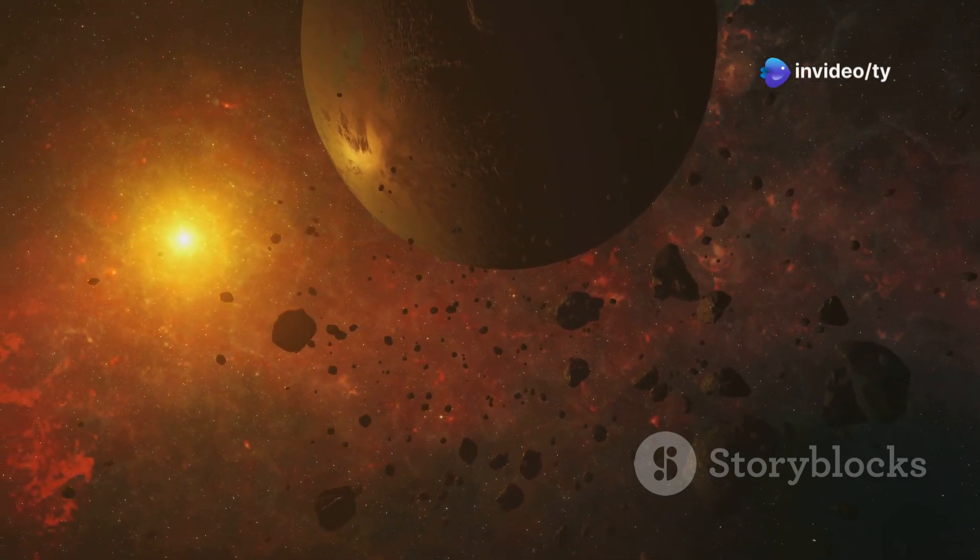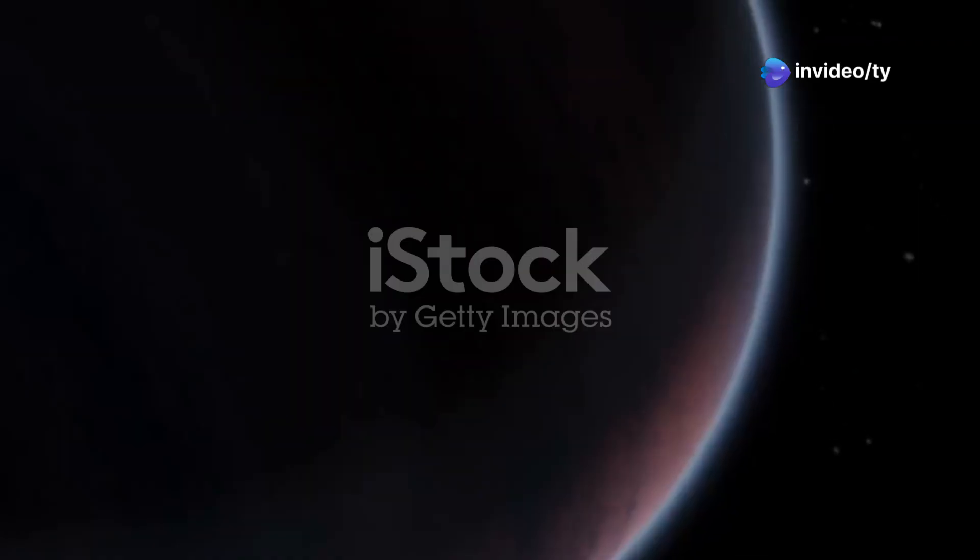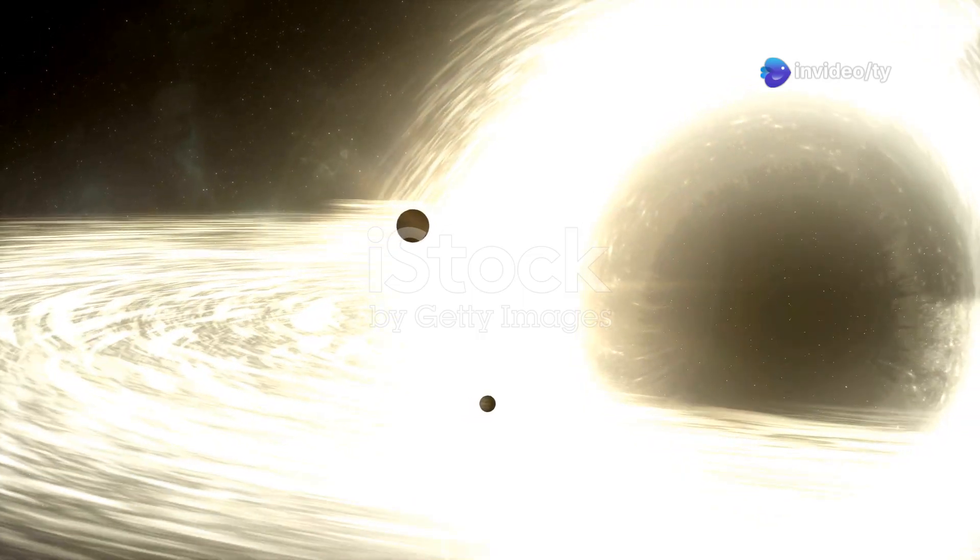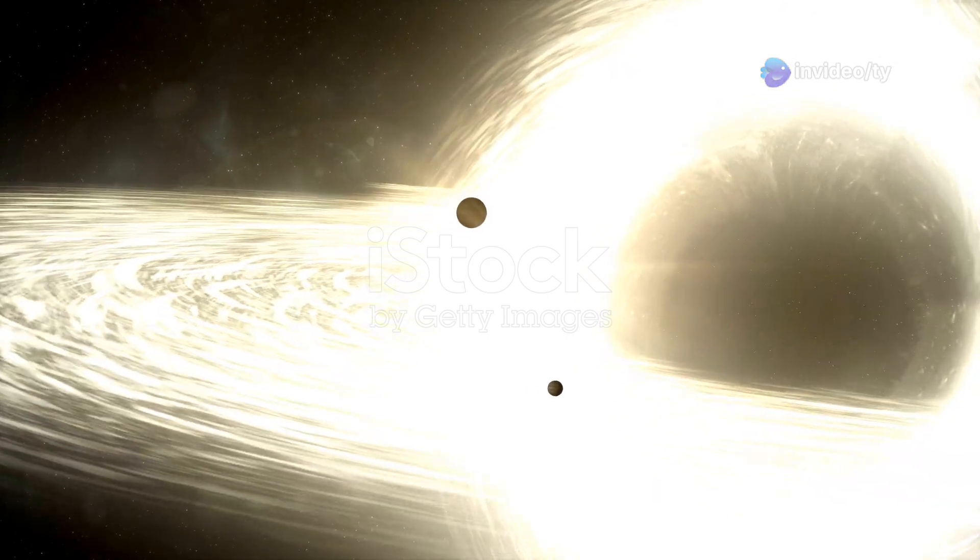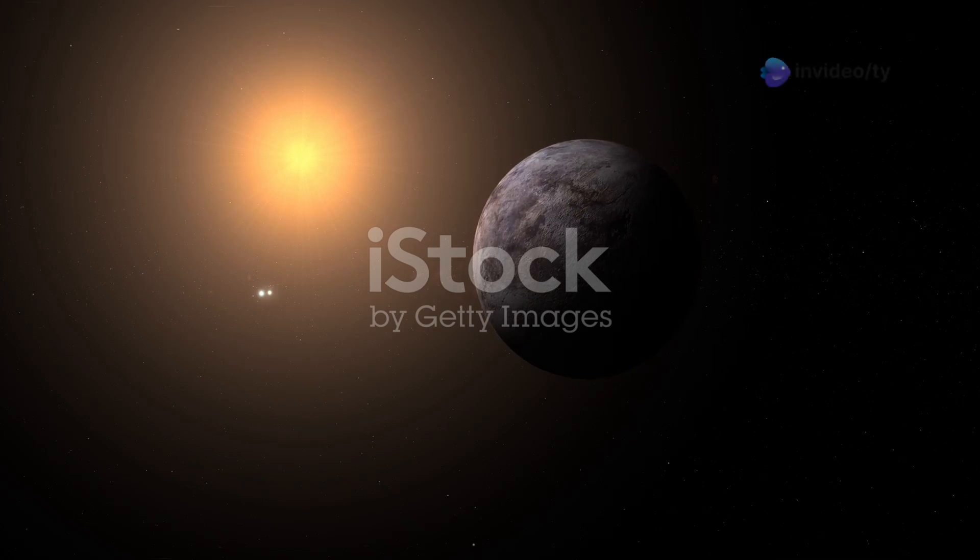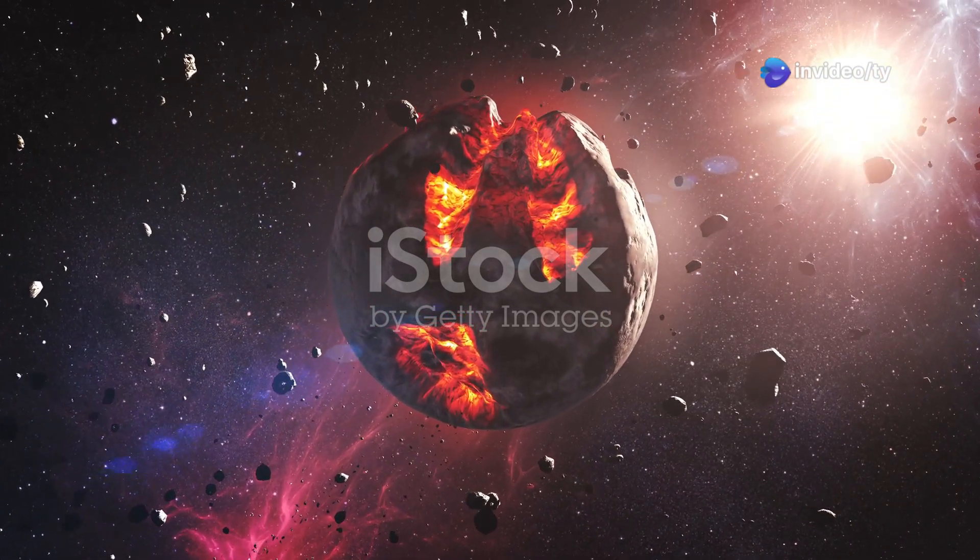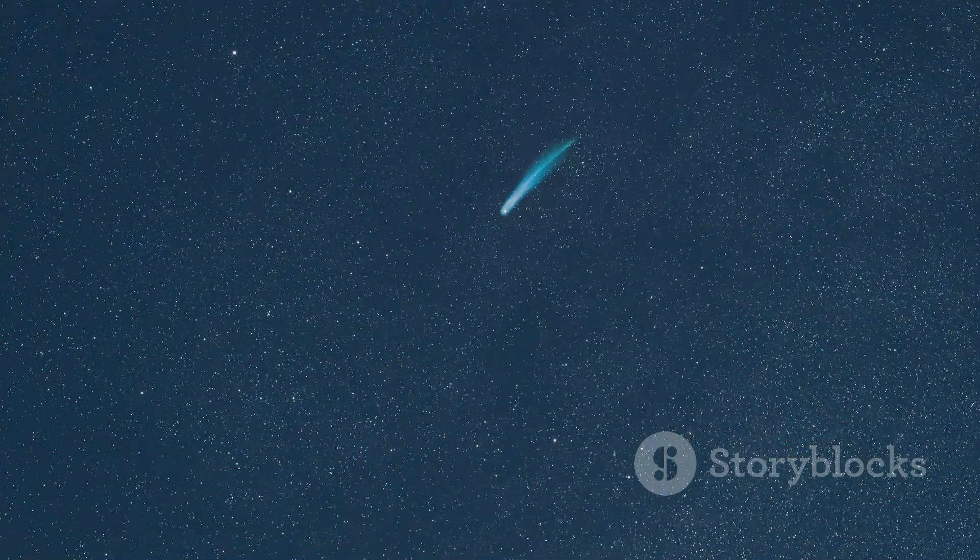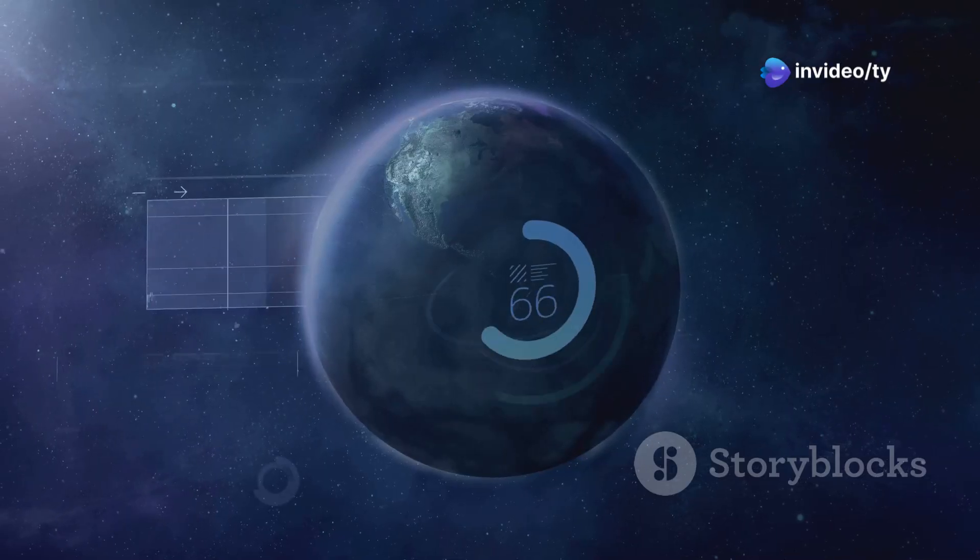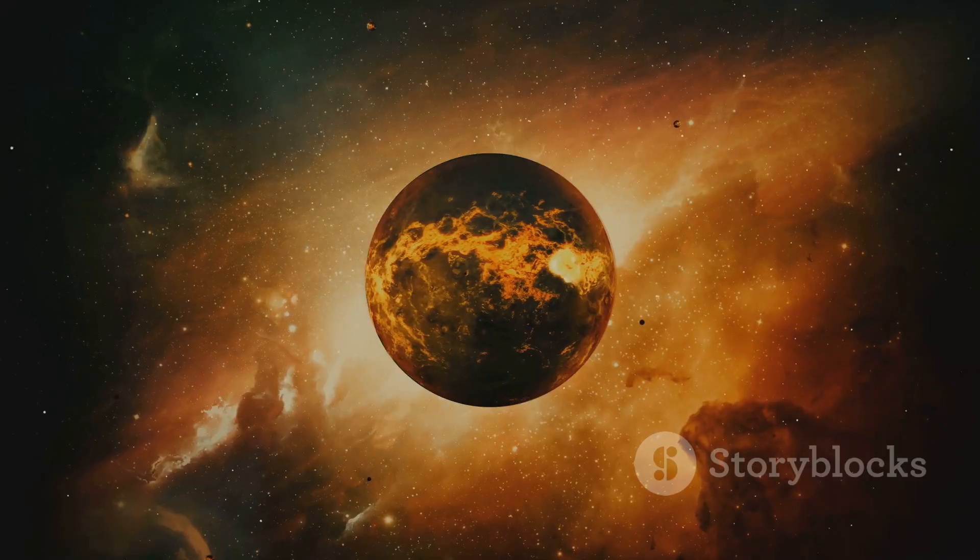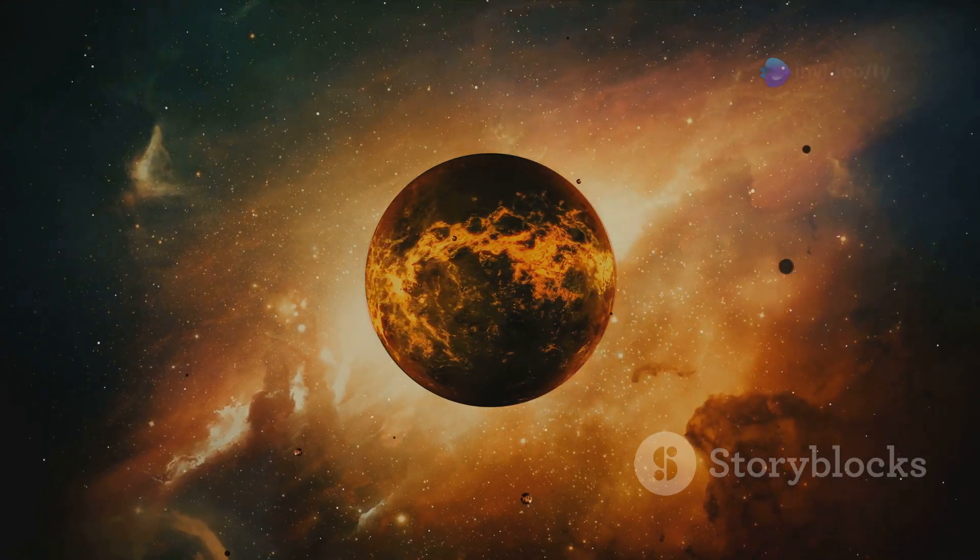Our next destination is a sobering reminder of the power of stars and the fleeting nature of planets. This is Wasp 12b, a gas giant located about 870 light years away in the constellation Auriga. Wasp 12b is a planet living on borrowed time. It's caught in a deadly dance with its star, a dance that will ultimately lead to its destruction. Wasp 12b orbits its star at an incredibly close distance, just 2.1 million miles. This close proximity means that the planet is being literally ripped apart by the star's gravity. The star's intense heat is causing the planet's atmosphere to balloon outward, forming a giant comet-like tail that trails behind it. Scientists estimate that Wasp 12b is losing about 189 quadrillion tons of its atmosphere every year. At this rate, the planet will be completely devoured by its star in about 10 million years.